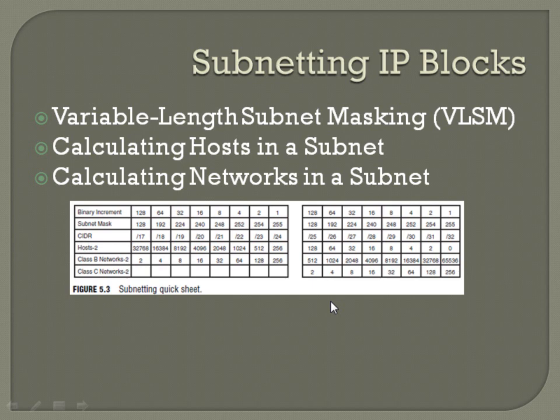You've got your first octet — it's not actually going to be equating to all ones on that. It's going to be your subnet mask, but 255 is going to be all ones. And then you've got zeroes for your final three octets.